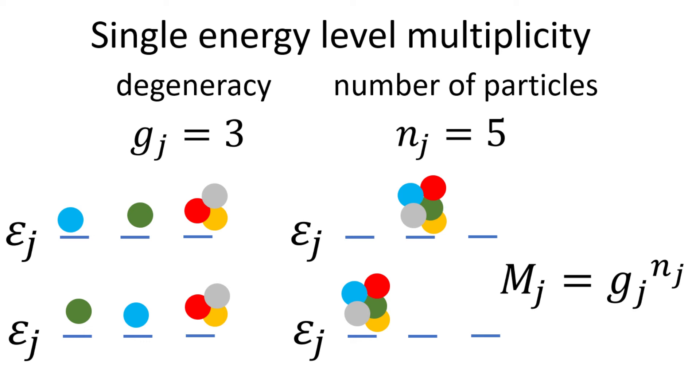We denote the number of quantum states for energy level j to be g sub j. Consider a single energy level with a degeneracy of 3 and with n equals to 5 particles. There are of course different ways of arranging these 5 particles across the different degenerate quantum states, where 4 of the possible arrangements are illustrated here.